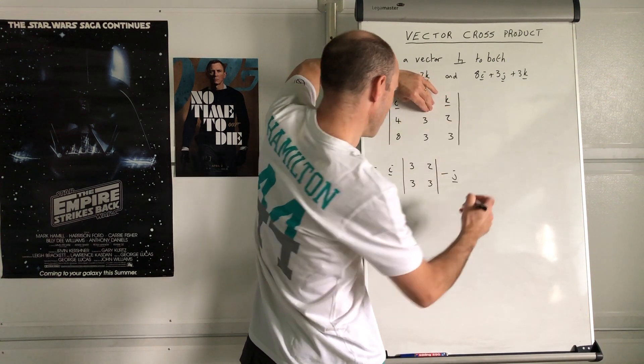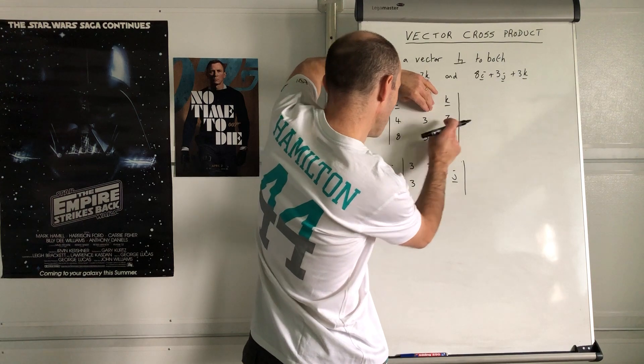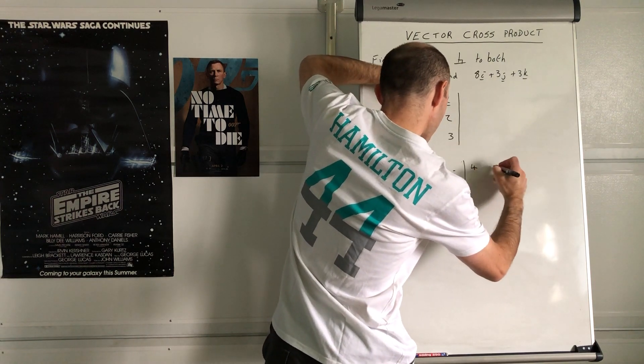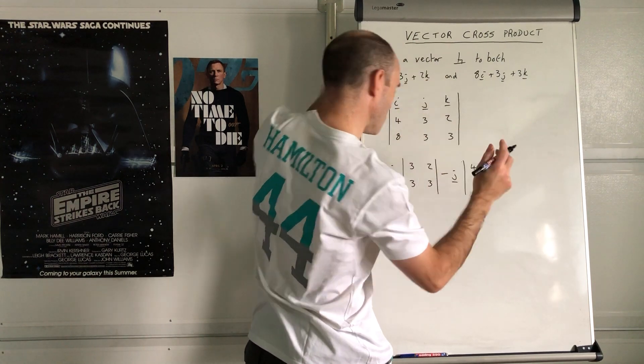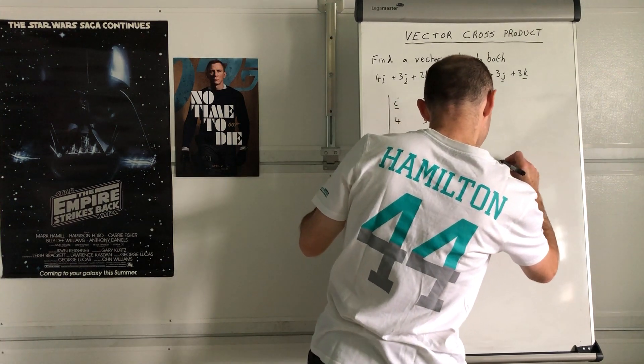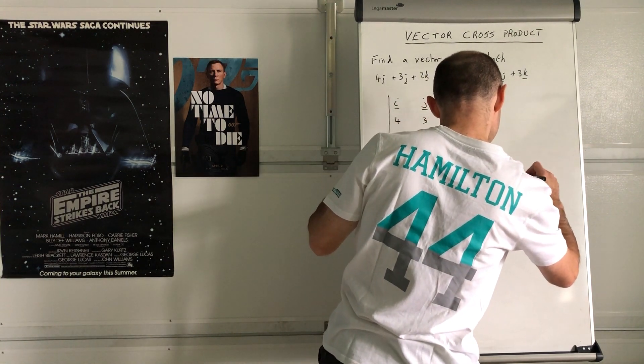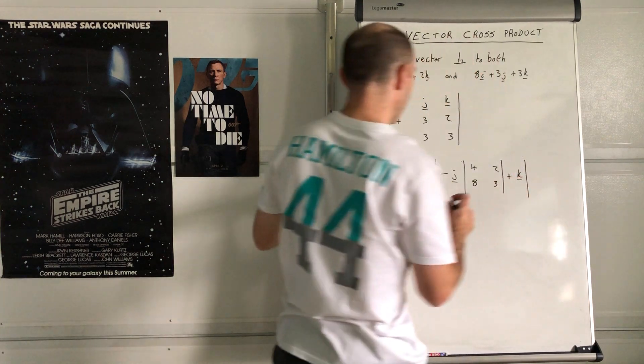I'm left with 4, 2 and then 8, 3. Then add the last bit which is k.